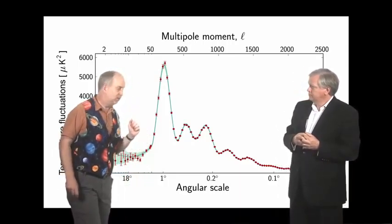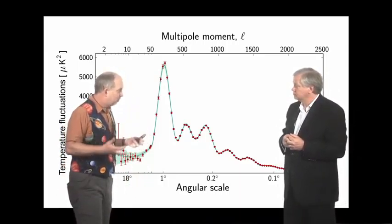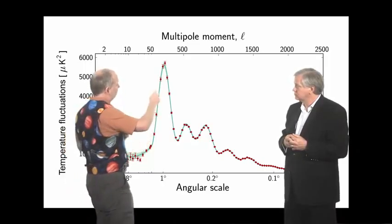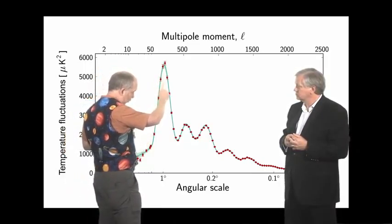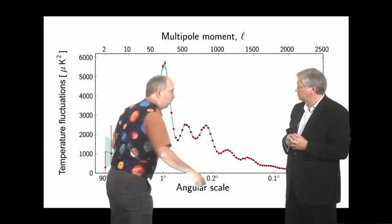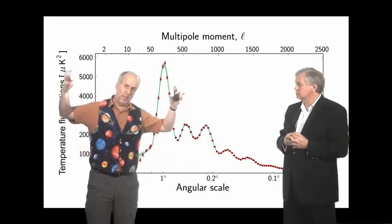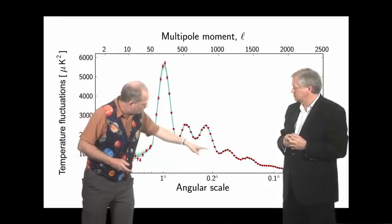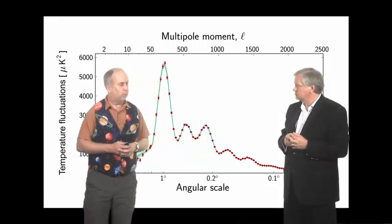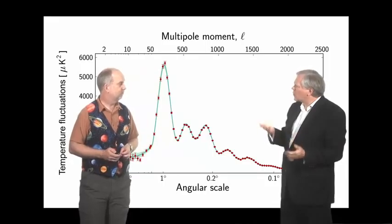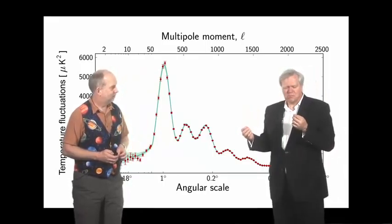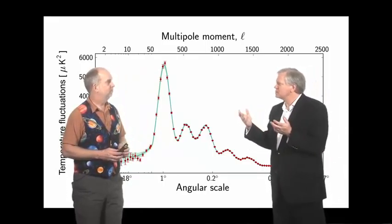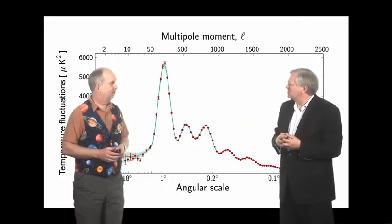So what you'd expect is, if there's a lot of dark matter, and particularly a lot of baryons, you'd expect the odd-numbered peaks, so one, three, five, and so on, to be enhanced, because that's where you're falling into the dark matter potential wells, and the even-numbered ones to be weakened, because that's when you're bouncing out. But of course it is a ratio, a little bit, between how much baryons there are and how much dark matter there is. So it's a little bit complicated.